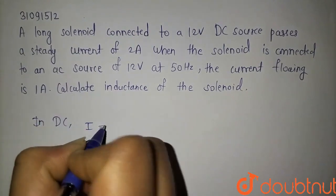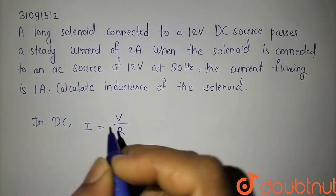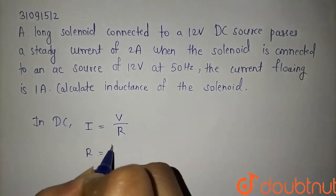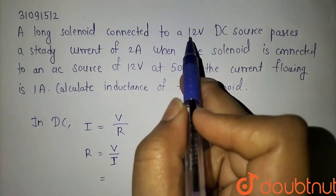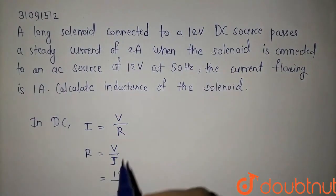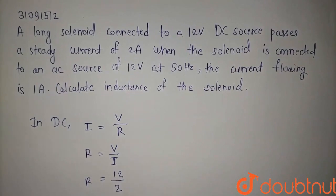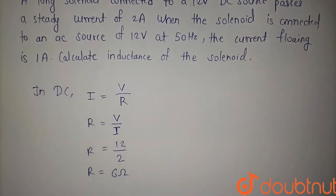current is voltage divided by resistance. So resistance will be voltage divided by current. Here the voltage source is 12 volts and the current was 2 amperes, so resistance in DC is 12 divided by 2, which equals 6 ohms.